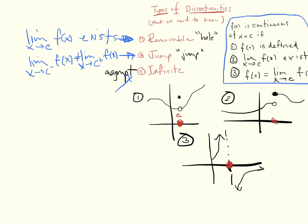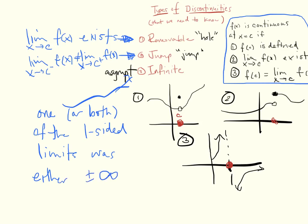Finally, an infinite is probably the easiest to detect here. One or both of the one-sided limits was either positive or negative infinity. I'm going to give you some examples of each on a different page.